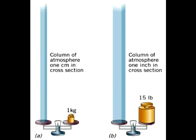At sea level, the average approximate weight of the column of air above a surface with 1 cm cross section is 1 kg. That is approximately 15 pounds per inch cross section.